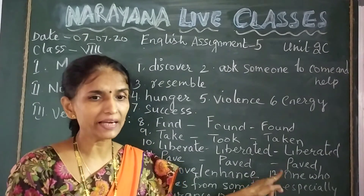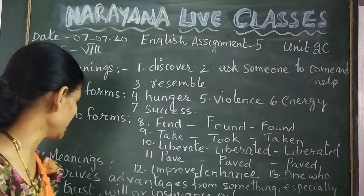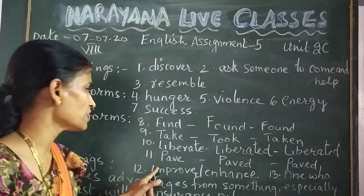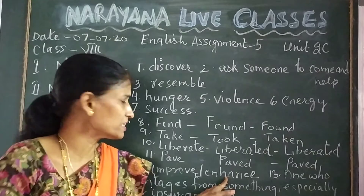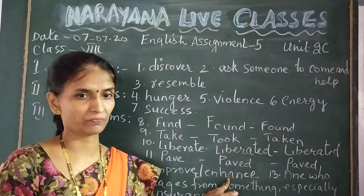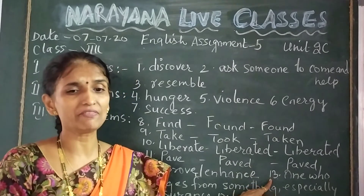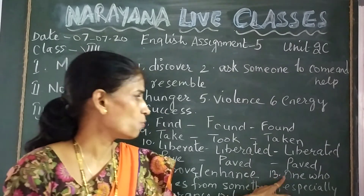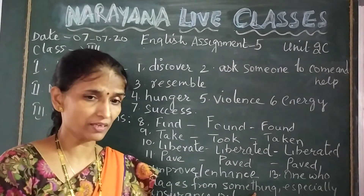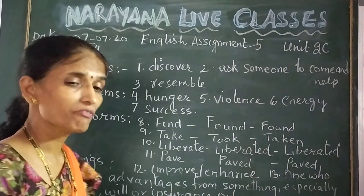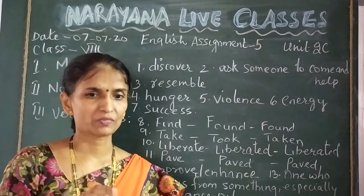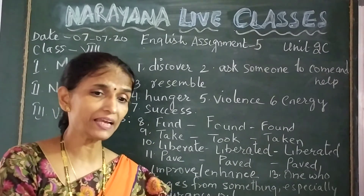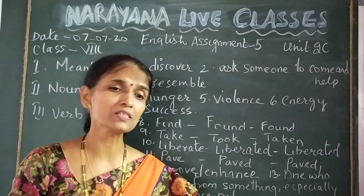The fourth section is to write the meanings of the words given. The first word is 'enrich', which means to improve or enhance. The last word is 'beneficiaries'. A beneficiary means one who derives advantages from something, especially a trust, will, or insurance policy.